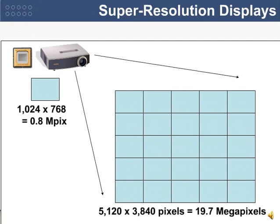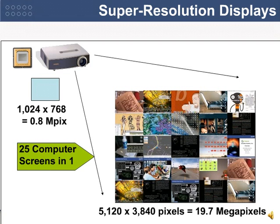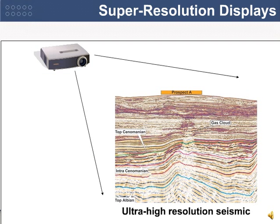So, how do you make the super-resolution display, where you start with a low-resolution image and end up with a high-resolution image? For this example, the multiplier was 25x — you were able to project 25 simultaneous Windows XP computer screens out of just one projector. There are many commercial applications for 3D display or high-resolution 2D display, such as seismic imagery for oil and gas.